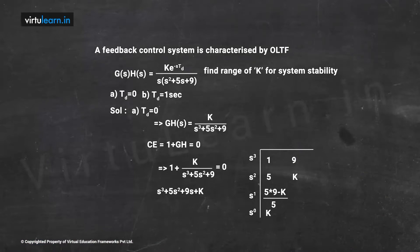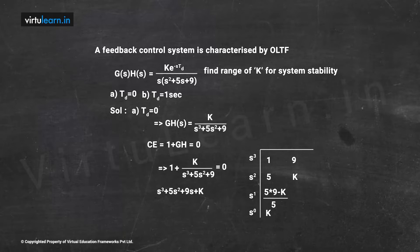Consider this example: a feedback control system with open-loop transfer function GH(s) = k · e^(-s·td) / [s(s² + 5s + 9)]. We need to find the range of k for system stability for two cases: (a) td = 0 (no time delay) and (b) td = 1 second. This lets us observe the effect of introducing the transportation lag into the system.